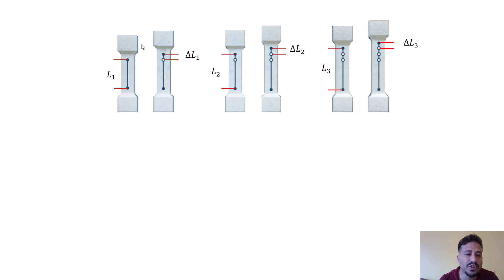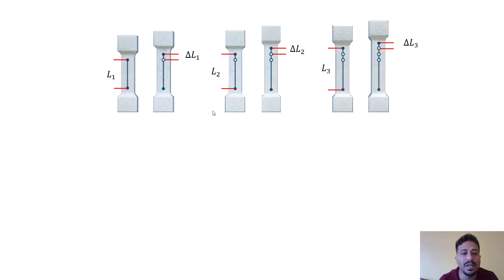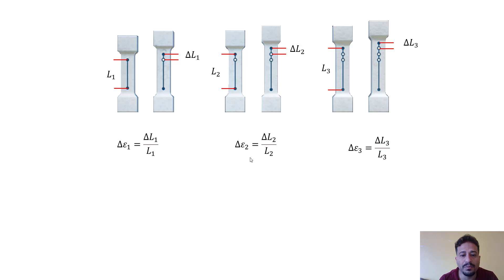As you can see, in engineering strain the length changes during the test. In the first step, the initial length is L1 and after applying a specific load a delta L occurs. In the second step, there is an additional delta L, and the total length from the first step becomes the initial length for the second step. So delta epsilon for each step is delta Li divided by Li, and the total strain equals the summation of delta Li divided by Li.